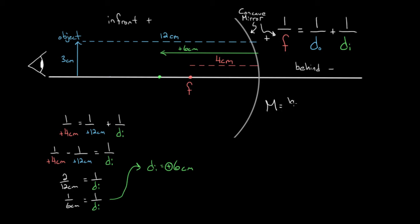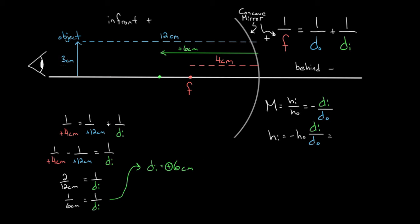The magnification equation says that magnification equals the height of the image divided by the height of the object, and that equals negative the image distance divided by the object distance. Solving for the height of the image: multiply both sides by H-O, giving us negative times the height of the object times the ratio of image distance over object distance. Plugging in numbers — the object is three centimeters tall, image distance was six, object distance was 12 — we get negative three centimeters times (6/12), which gives negative 1.5 centimeters.